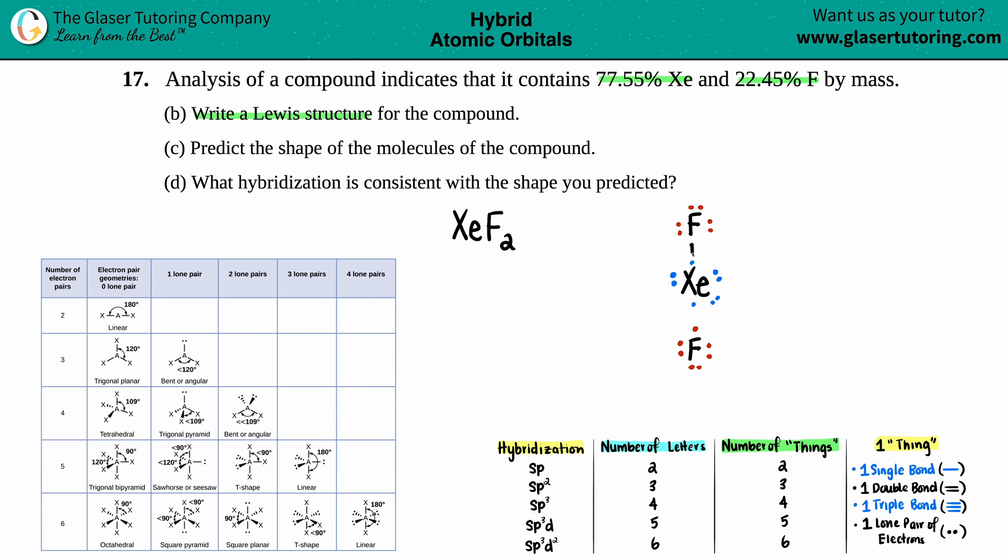You make a single bond. So dot to dot, single bond, dot to dot, single bond. You just make sure that your outer elements have the octet first. This fluorine has 8 electrons, this fluorine has 8 electrons. So that's good. And xenon, even though it's got 10 electrons in the middle, that's okay because xenon can have an expanded octet because it has access to those d orbitals. So this is your Lewis structure and B is done.